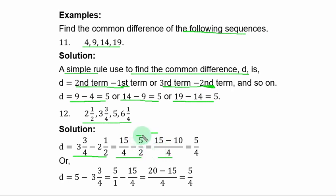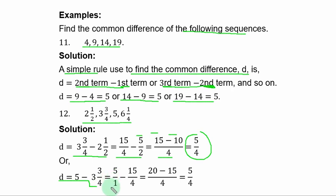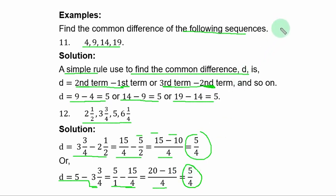Or, the same common difference equals third term minus second term. You can write 5 as 5 over 1 to have a balanced fraction, then convert to improper fraction. The LCM is 4, and when you simplify, you get the same 5 over 4 as the common difference.